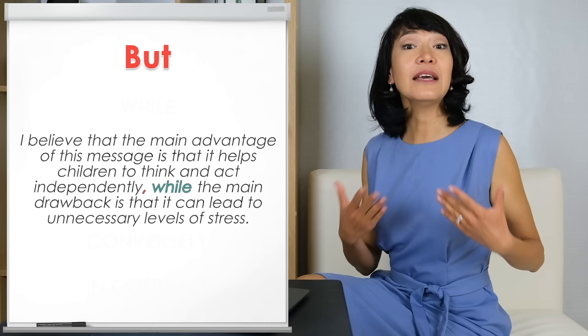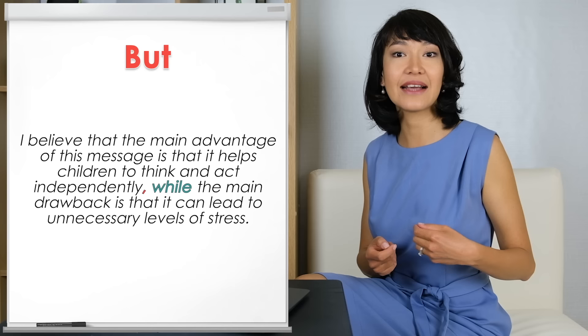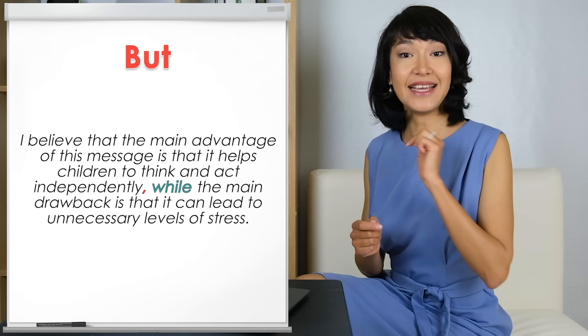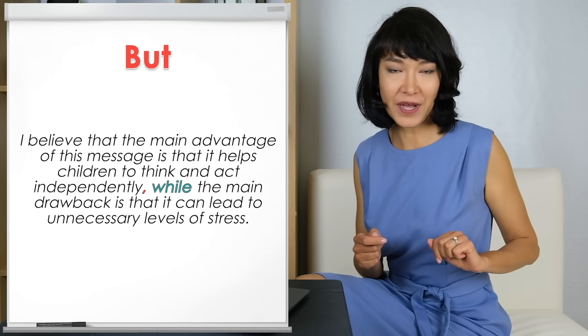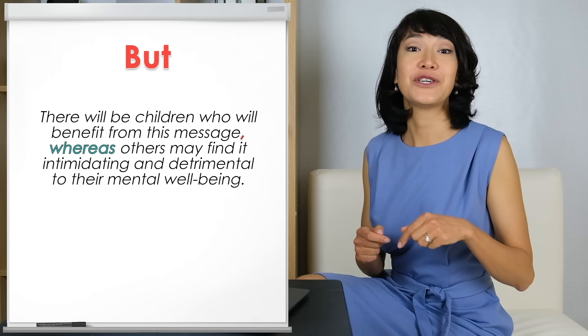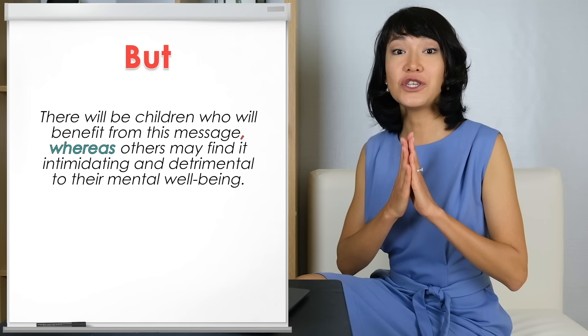Let's look at some examples. 'I believe that the main advantage of this message is that it helps children to think and act independently, while the main drawback is that it can lead to unnecessary levels of stress.' The linker WHILE is in the middle — when we use it to contrast two ideas, don't forget your comma. We can use WHEREAS in exactly the same way: 'There will be children who will benefit from this message, whereas others may find it intimidating and detrimental to their mental well-being.'